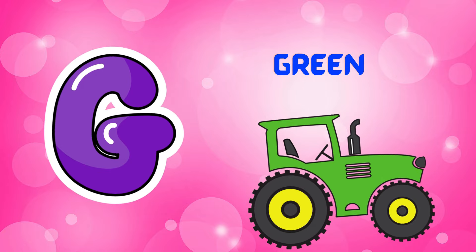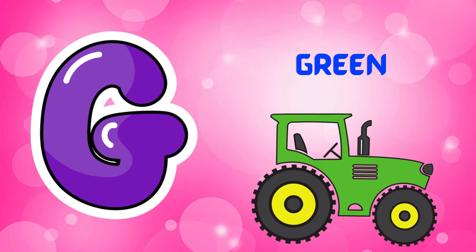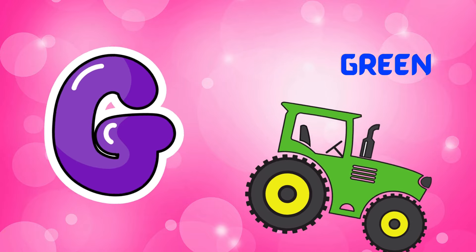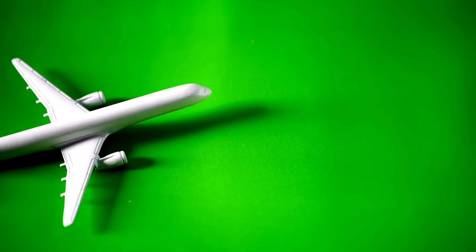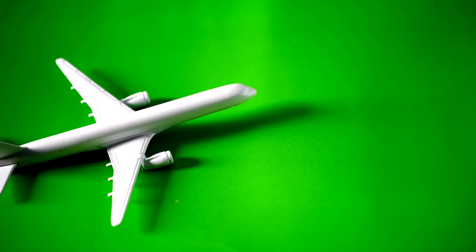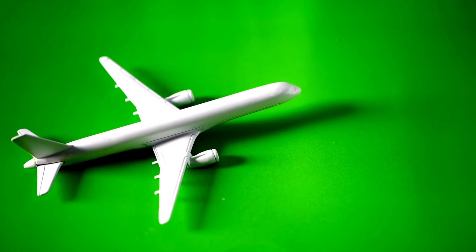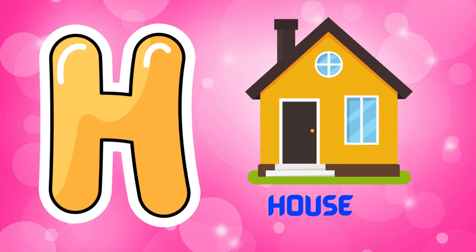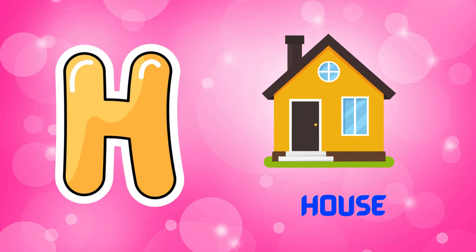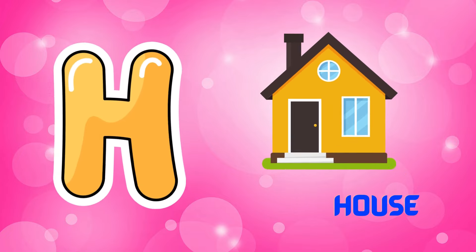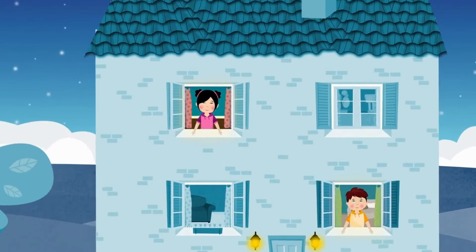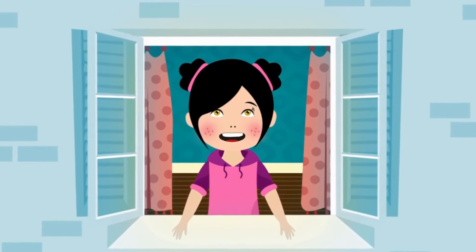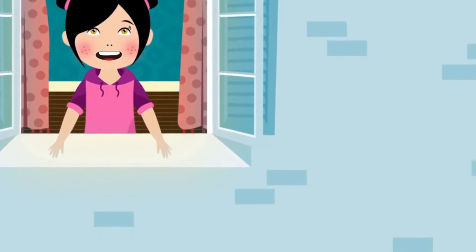G is for Green. Green. Green. G, Green. H is for House. House. House. H, House.